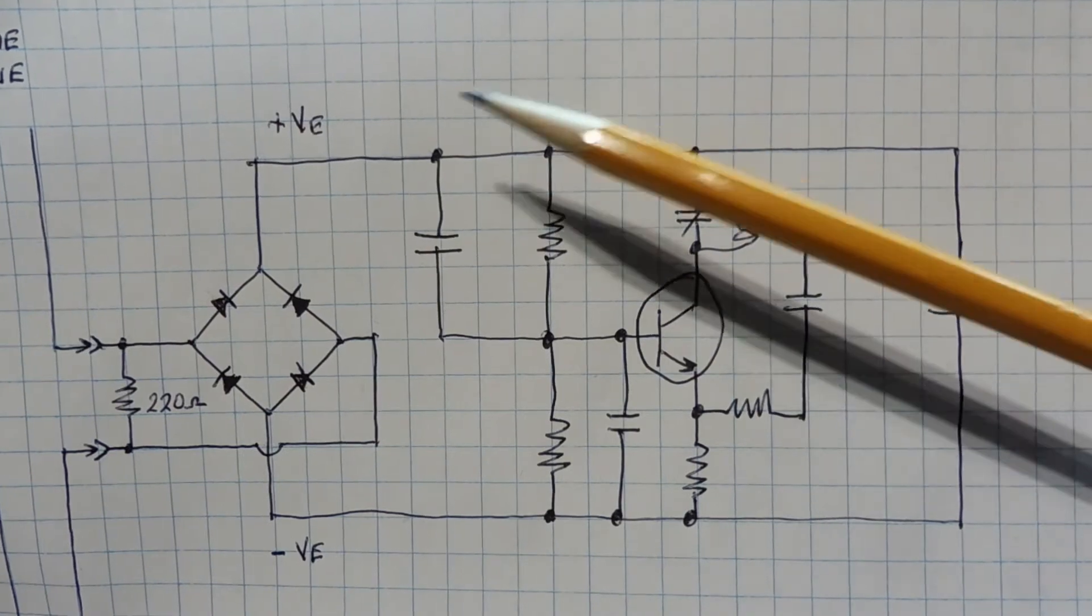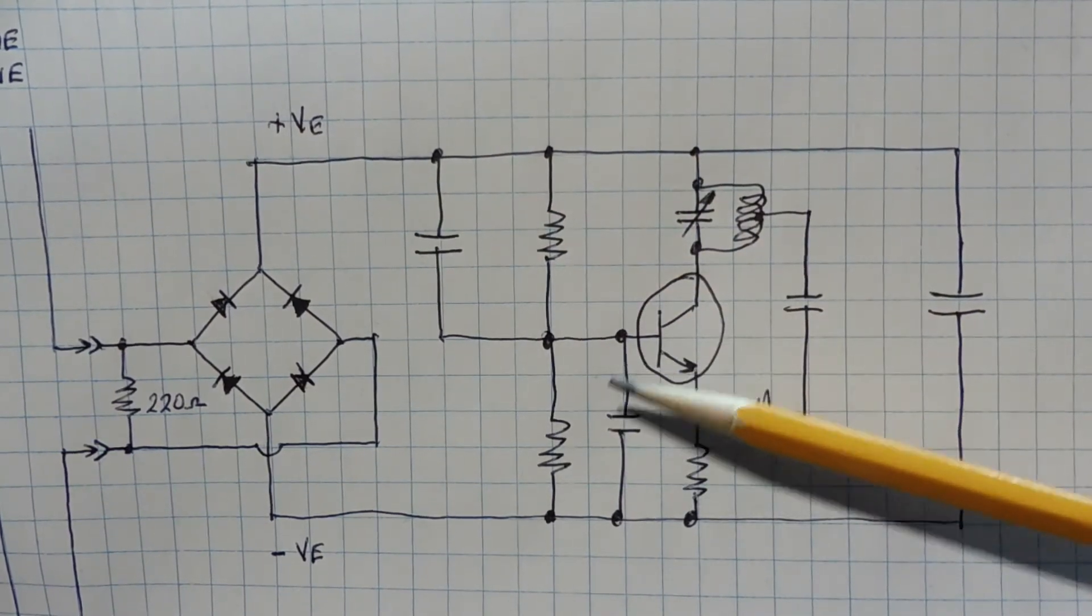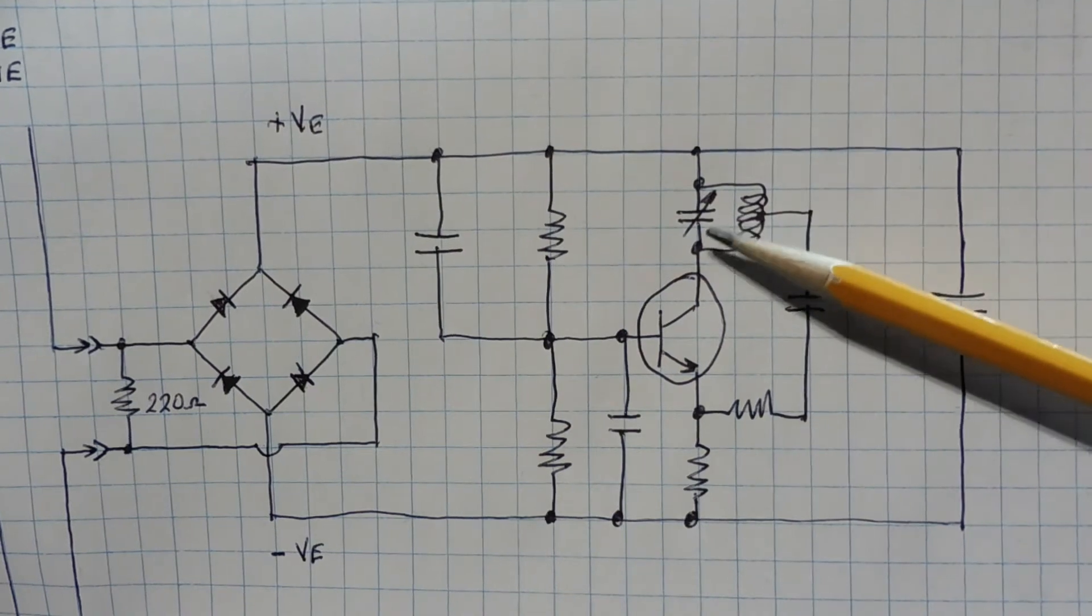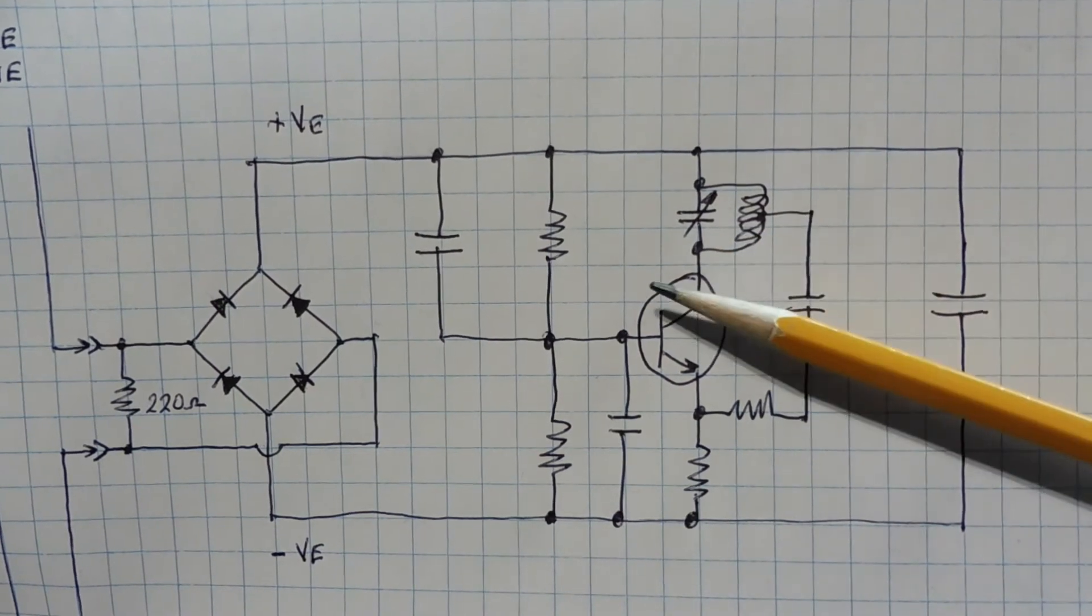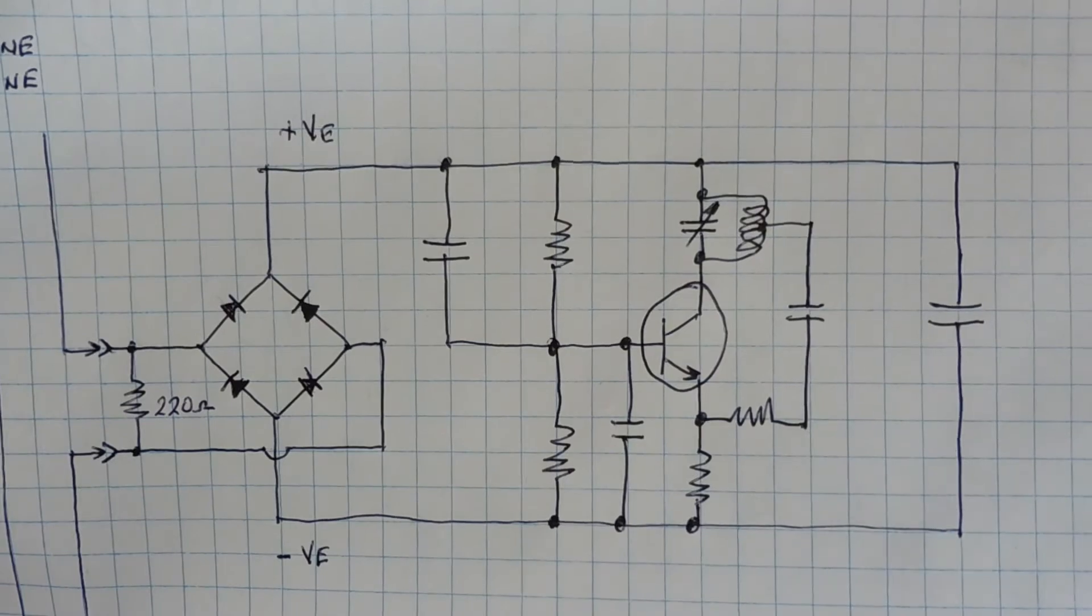As the audio comes into the base, it's going to frequency modulate the carrier frequency and it's going to deviate plus above and below the center frequency which will give us the frequency modulation.